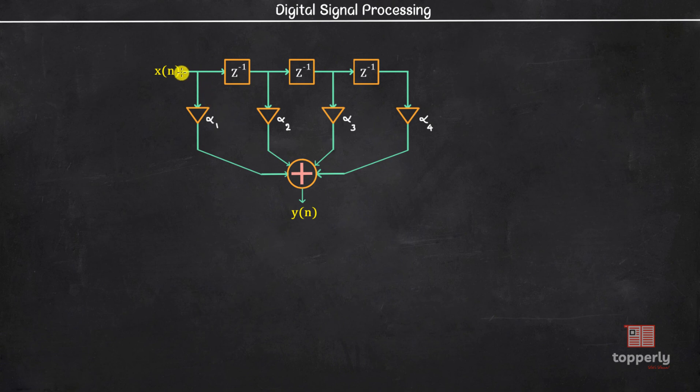If you see, this is a multiplier and the input to it is x of n, so the output of the multiplier is alpha 1 into x of n. Now, here we have a unit delay and the input to it is x of n, so the output here will be x of n minus 1. This x of n minus 1 passes through a multiplier with scalar alpha 2, so the output here is alpha 2 into x of n minus 1. Now, this x of n minus 1 also passes through this unit delay, so here we have alpha 3 into x of n minus 2.